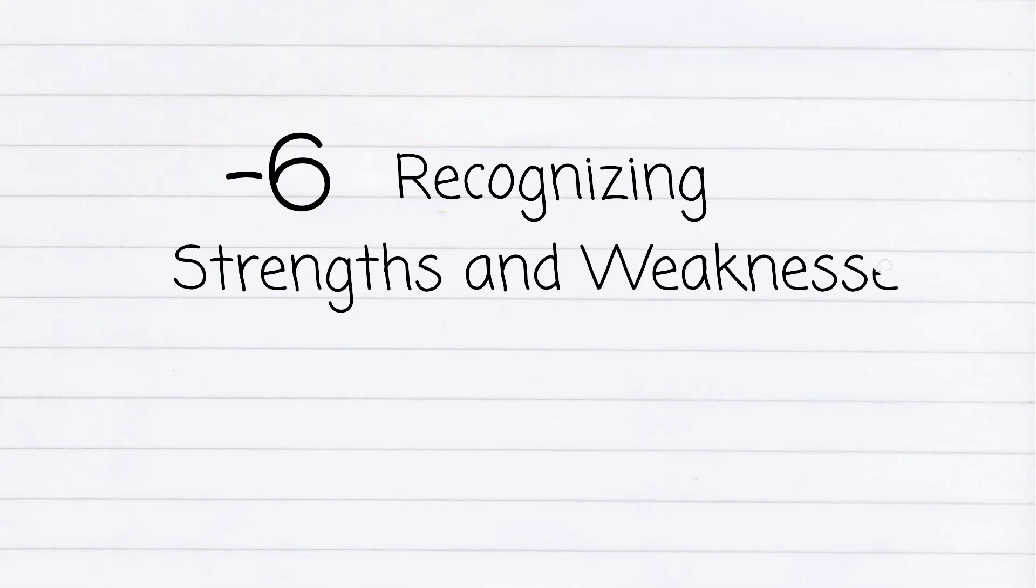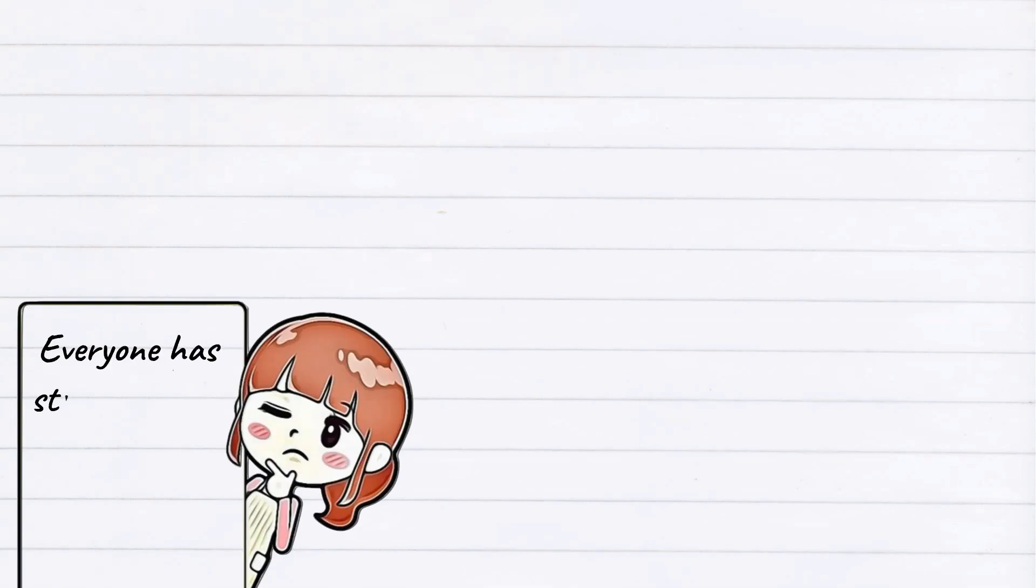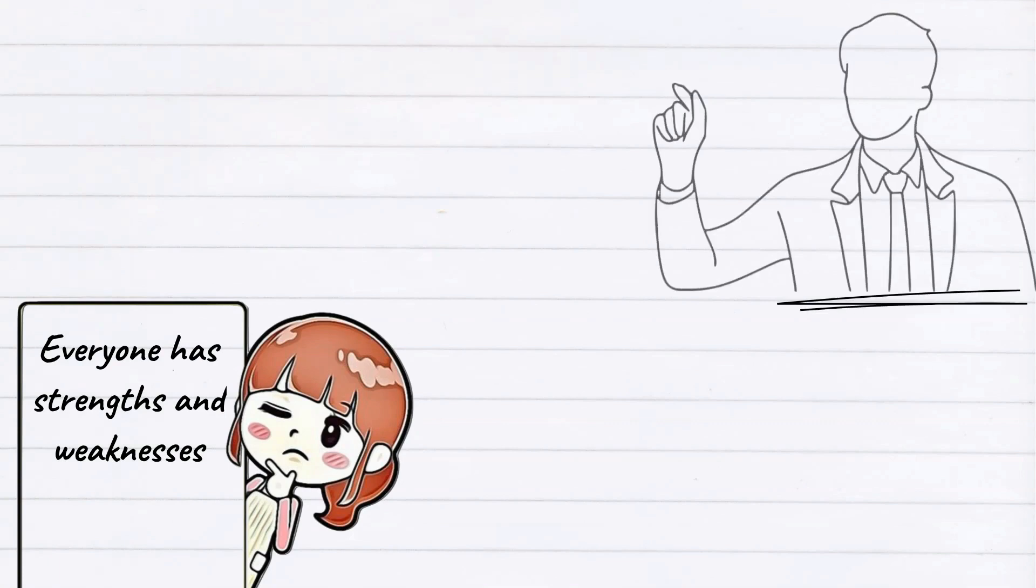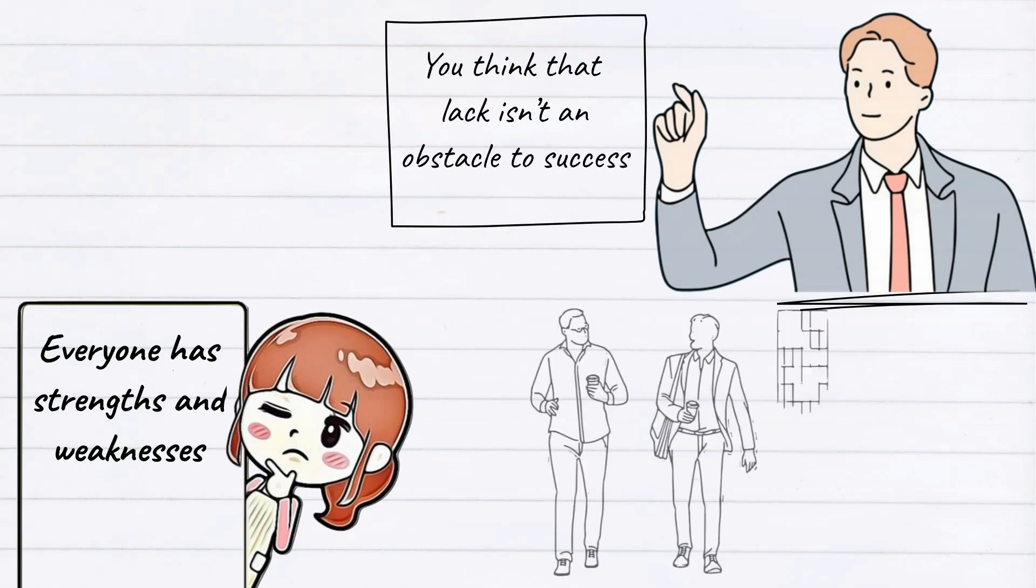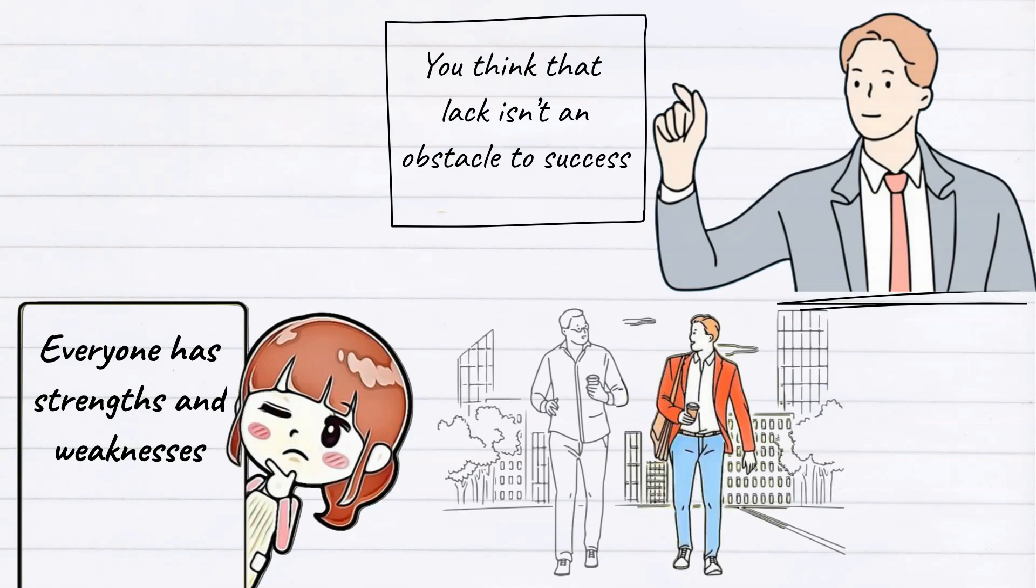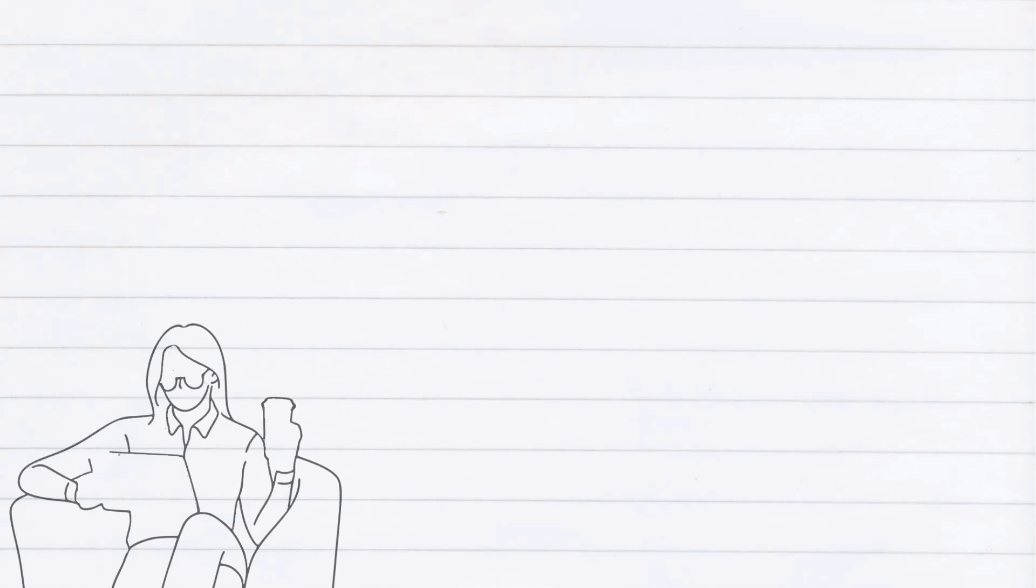Six: recognizing strengths and weaknesses. An introverted person has the principle that nobody's perfect. You believe that everyone has strengths and weaknesses, so that you can respect yourself more. What's more, you're trying to improve yourself and know how to behave when it comes to your ugly nature. You think that lack isn't an obstacle to success because behind the shortcomings there are advantages that can bring them to the gate of success.